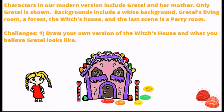The characters in our modern version include Gretel and her mother — that's it. Only Gretel is shown. The backgrounds include one white background, a living room background which is Gretel's living room, a forest background, a witch's house, and the last scene is a party room. So there are five different backgrounds.